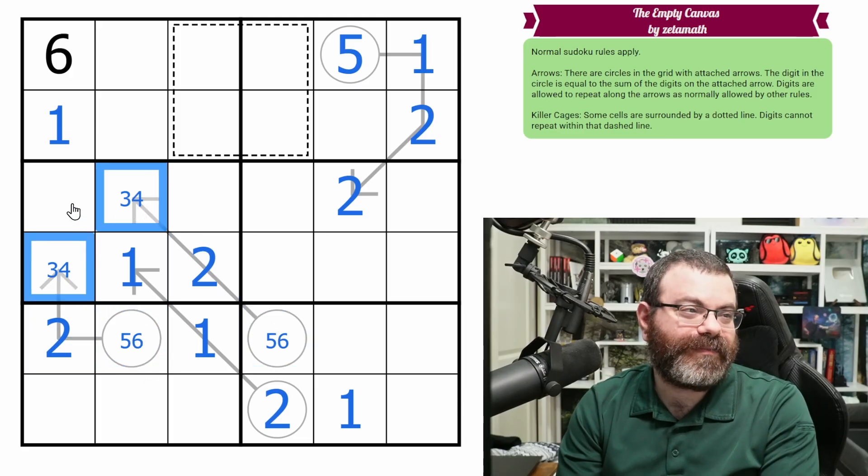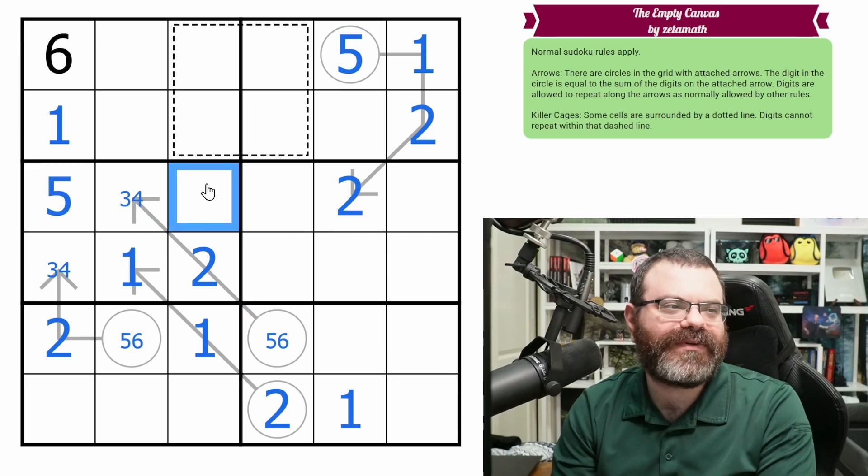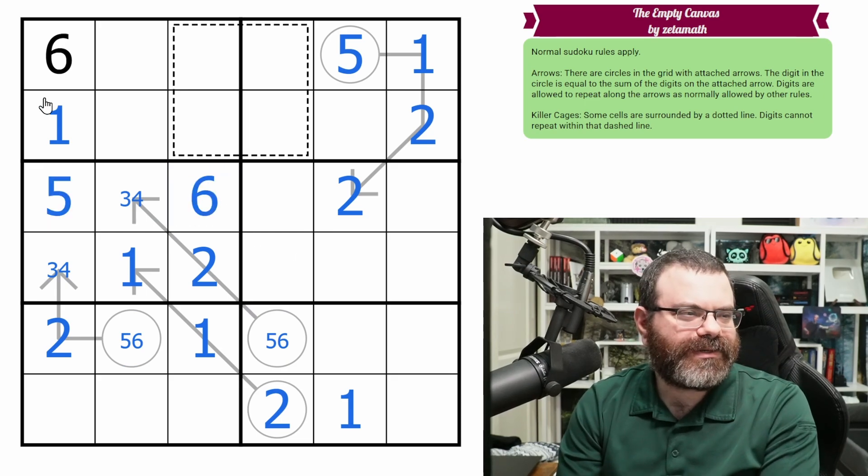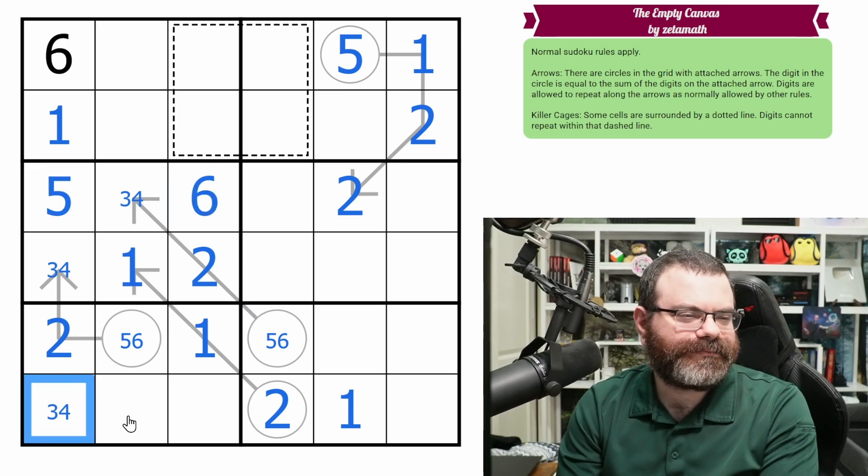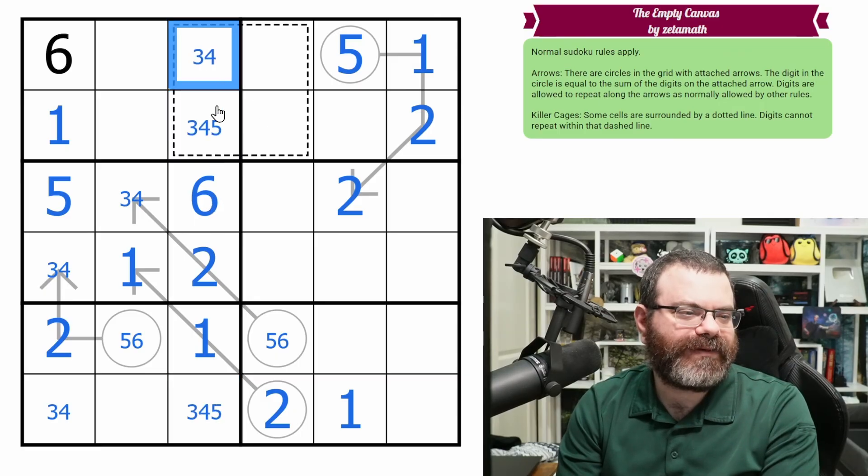So we end up with a 3, 4 pair here. We need 5 and 6. This 6 tells us the order. That's 5 and 6. It's going very nicely. This is 3 or 4. These are 3, 4, 5. That's not a 5.